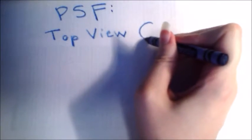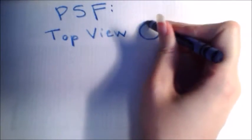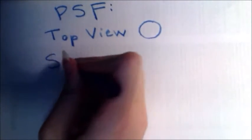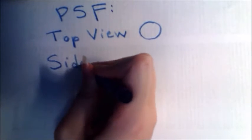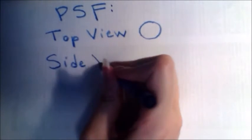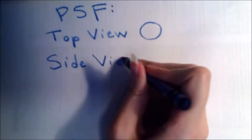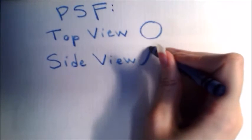No matter how high quality a conventional light microscope may be, the resolution will always be limited by the wavelength of light. When a fluorophore is imaged using conventional fluorescence microscopy, the light from the excitation beam will create a diffraction pattern at the focal point. The radius of the central disk of this diffraction pattern is given by the Abbe resolution, lambda over 2NA.